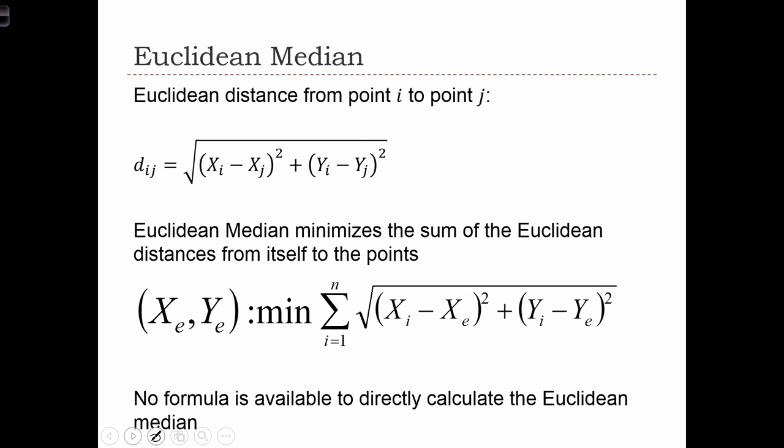We're going to call that location the Euclidean median. The Euclidean median minimizes the sum of the Euclidean distances from itself to the points.